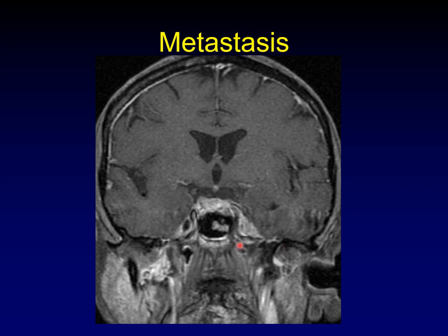Here's a metastasis filling up Meckel's cave. That's what it's supposed to look like on the other side. The Meckel's cave is filled and expanded. We talked about how this is a classic finding of perineural spread, and it is — but other things can expand Meckel's cave, like a metastasis to the cave.